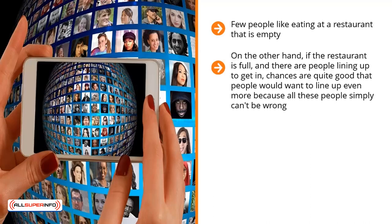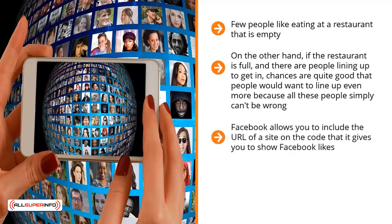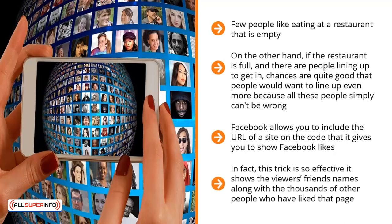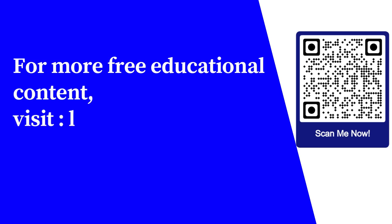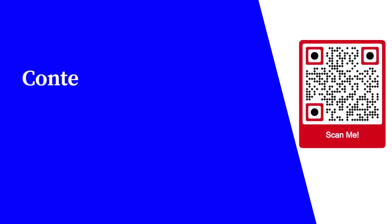Add the developer code of the biggest brand in your niche to your squeeze page. Facebook allows you to include a site URL in the code it gives you to display Facebook likes. Embed that code onto your squeeze page to give the impression that a lot of people already like your page. This trick is so effective that it shows the viewer's friends' names along with the thousands of other people who have liked that page. Piggyback on this social pull and give the viewer the push he or she needs to sign up to your list.